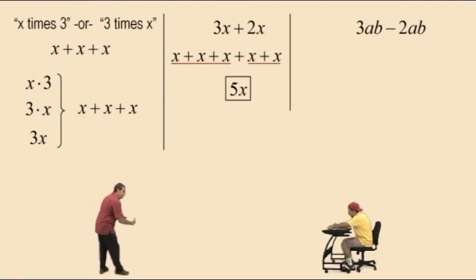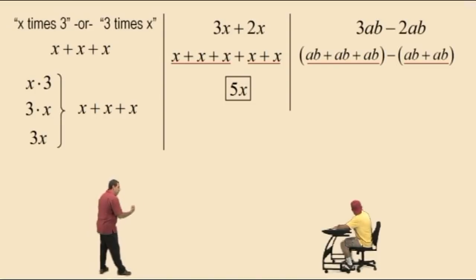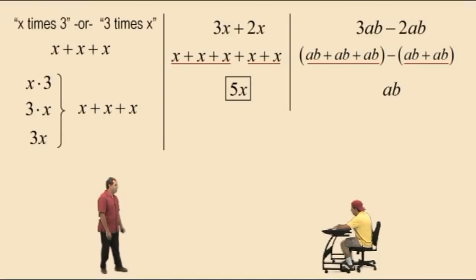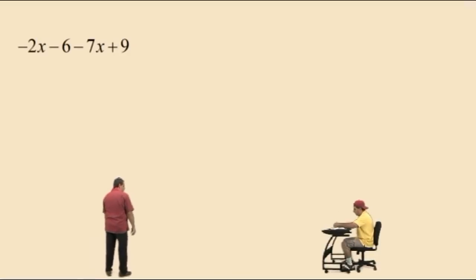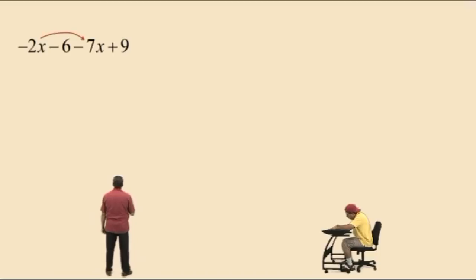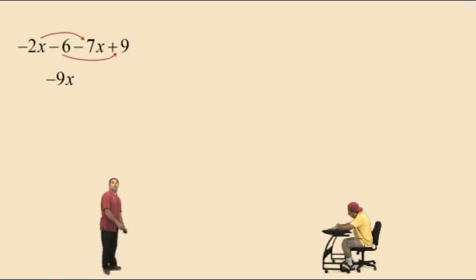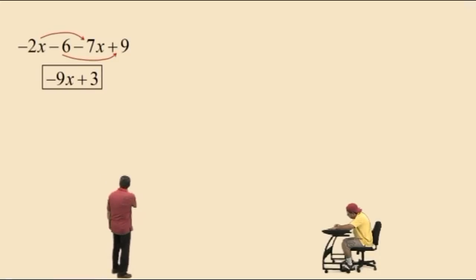Let's do another one. Here's 3ab's take away 2ab's. So 3ab's take away 2ab's leaves you with 1ab. How do you write 1ab? Just ab — you don't have to put the 1 in front. Now we're going to start combining like terms. We're going to visualize everything being added, so we have negative 2x plus negative 7x, which is negative 9x, and now negative 6 plus 9 is 3. And that's it — you cannot combine negative 9x and 3 because they are not like terms.